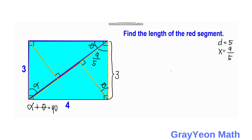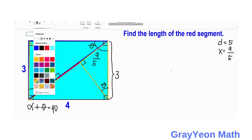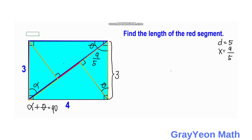Focusing on the orange triangle, since this angle is alpha, the complementary angle is theta. Since these two triangles have a side between two congruent angles, by the Angle-Side-Angle congruence theorem, the two triangles are congruent. Therefore, this length should also be 9 over 5.